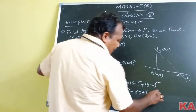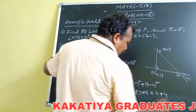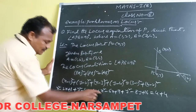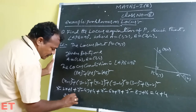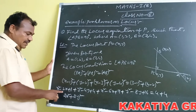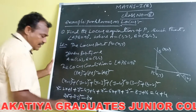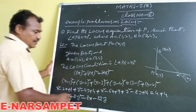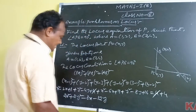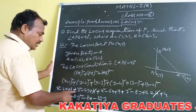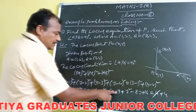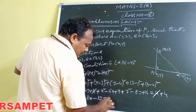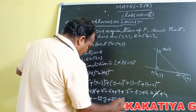On the RHS: (3 minus 1)² is 4, and (4 minus 2)² is 4, giving AB² = 8. Simplifying the LHS: x² plus x² gives 2x², y² plus y² gives 2y². The x terms: minus 2x minus 6x gives minus 8x. The y terms: minus 4y minus 8y gives minus 12y. Constant terms: 1 plus 9 plus 4 plus 16 equals 30, minus 8 gives 22. So 2x² plus 2y² minus 8x minus 12y plus 22 is equal to 0.